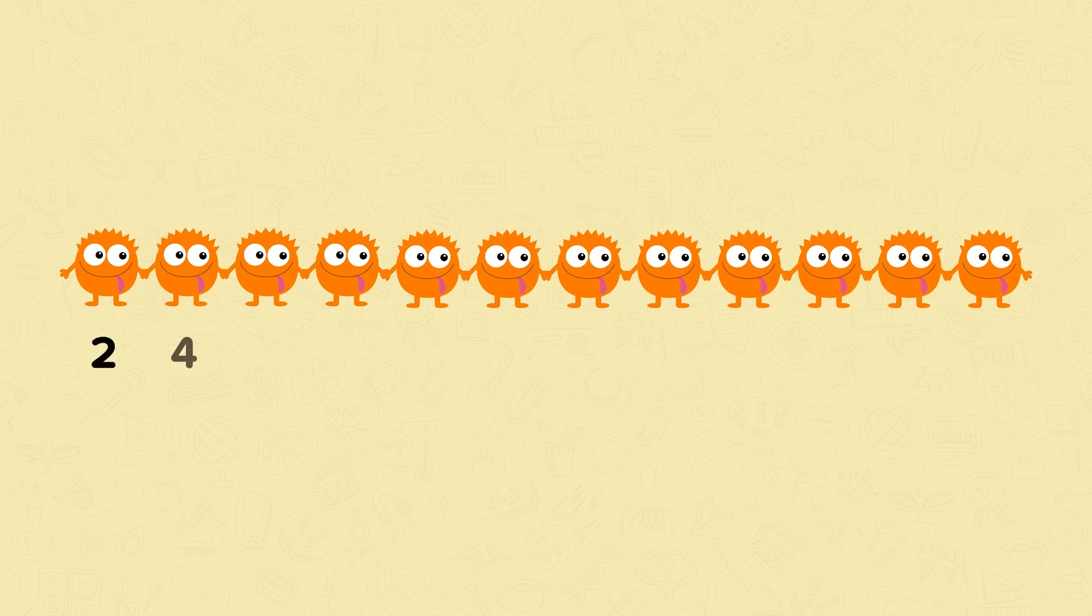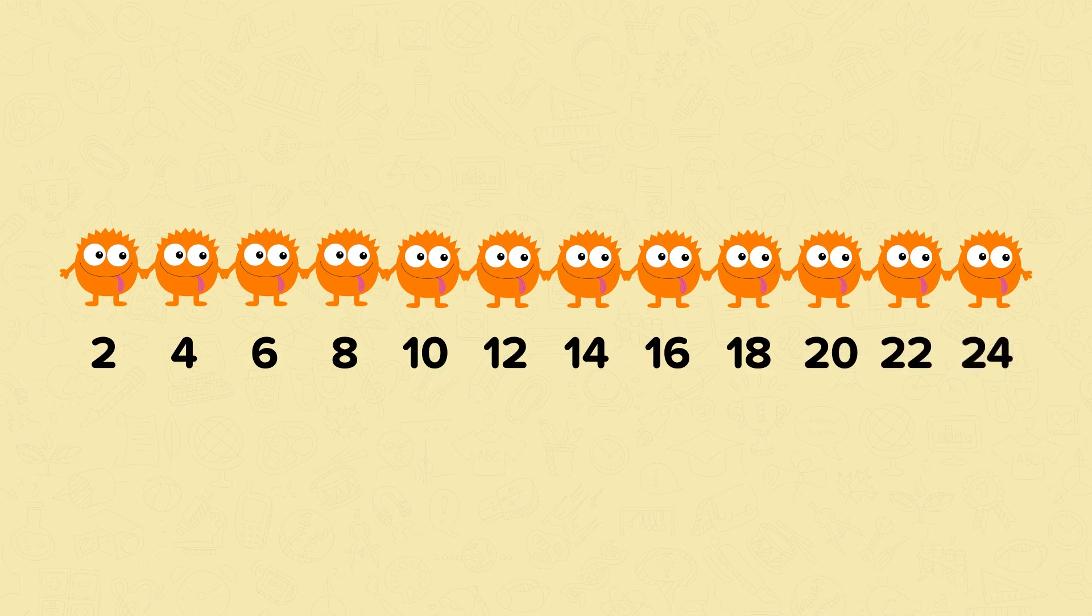2, 4, 6, 8, 10, 12, 14, 16, 18, 20, 22 and 24. We have counted in 2s and worked out that 12 lots of 2 is 24. So there are 24 eyes altogether.